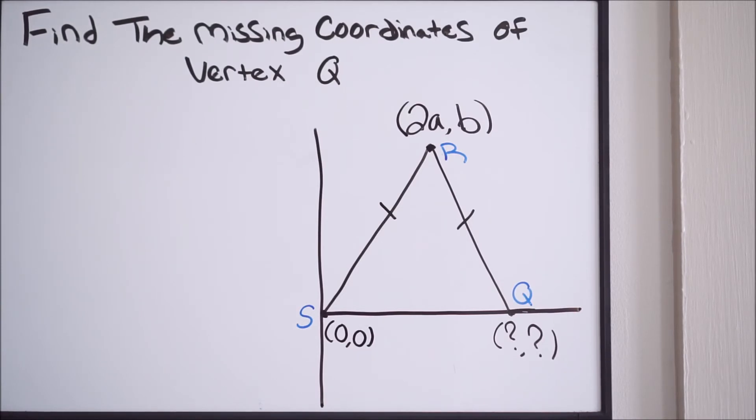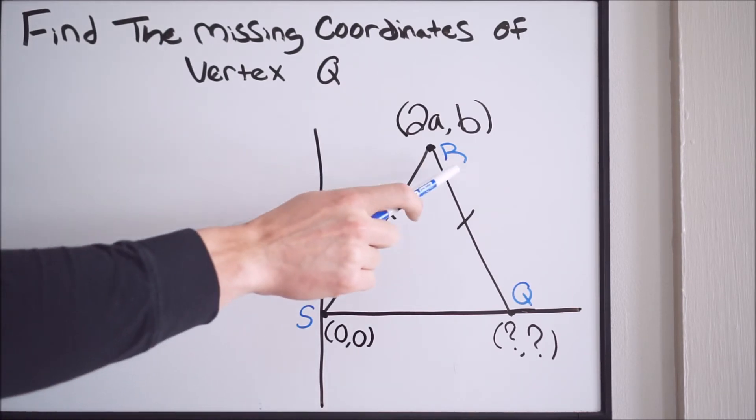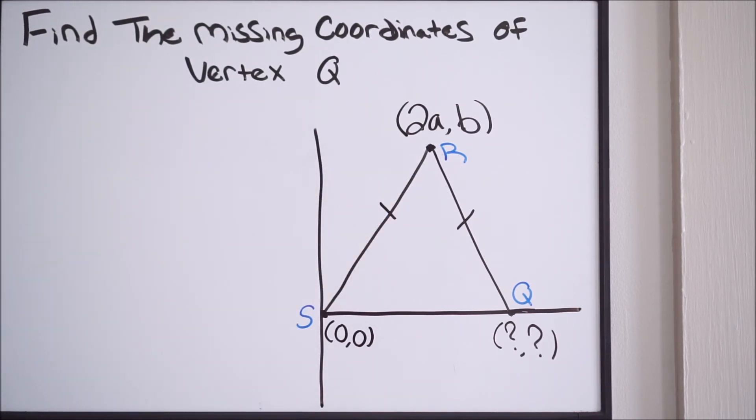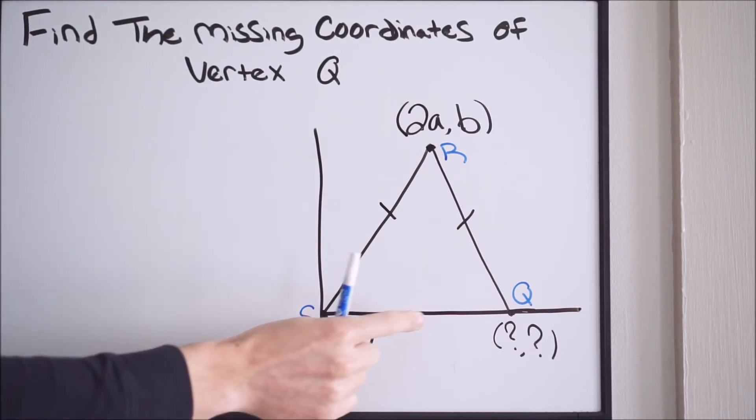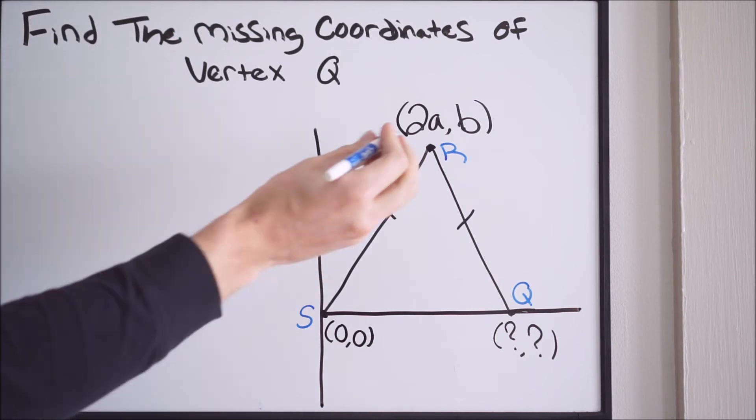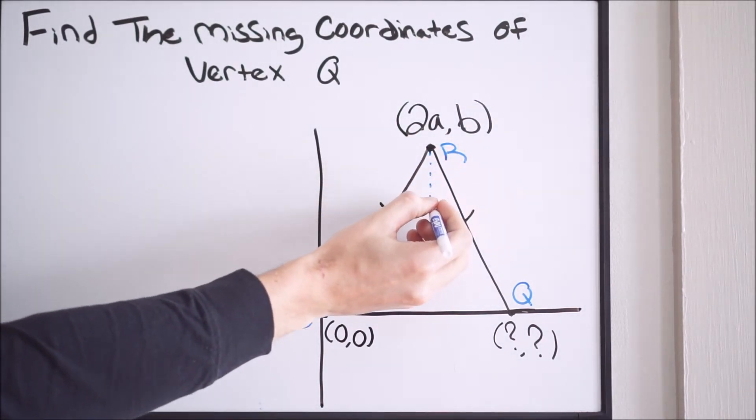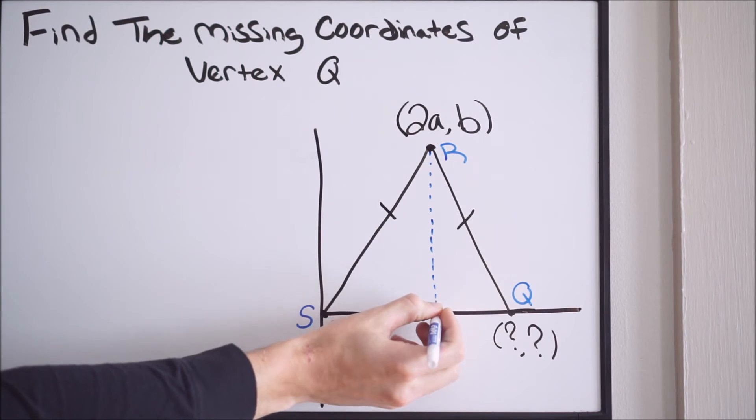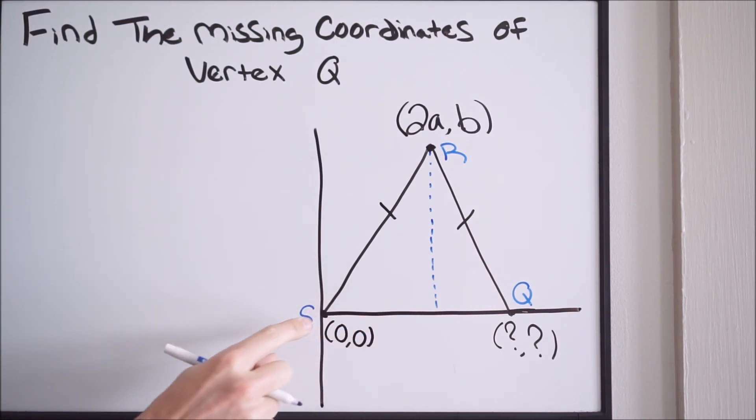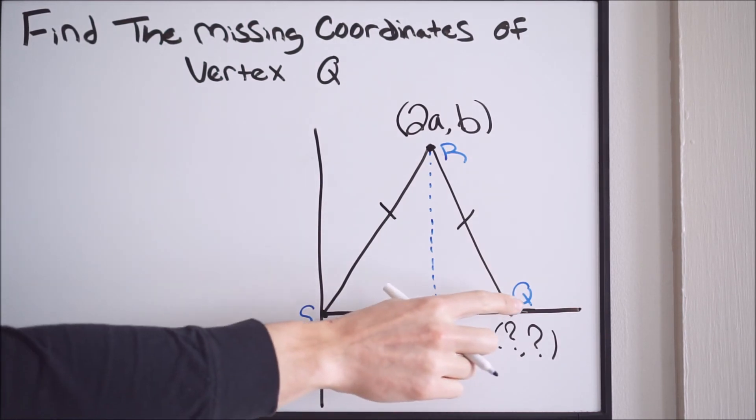Now let's talk about how you're going to find this X value. If we look at vertex R, since we're dealing with an isosceles triangle here, we know that vertex R is halfway between both vertex S and vertex Q. If you draw in a vertical dashed line for more of a visual, this is the halfway point between vertex S and vertex Q.